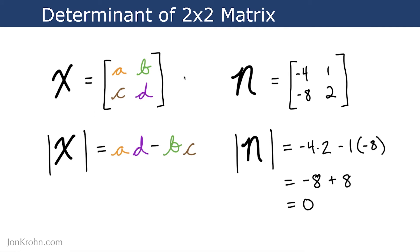All right, let's do one more example here now with this matrix N. And so when we do A times D minus B times C, we have negative 4 times 2, that comes out to negative 8, and then we have 1 times negative 8, we have the minus sign here, so negative 1 times negative 8 comes out to positive 8. All right, and then simplifying negative 8 plus 8, of course, comes out to 0.